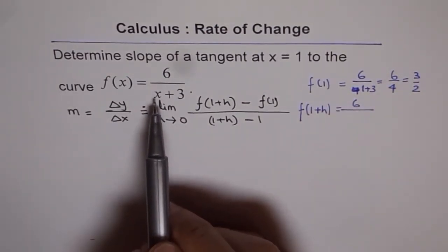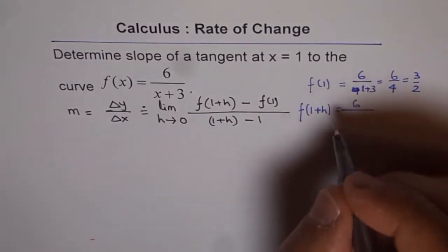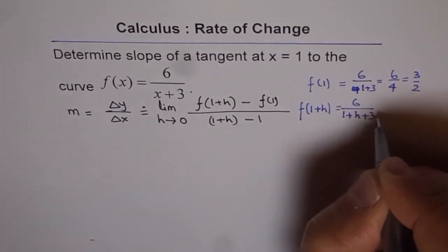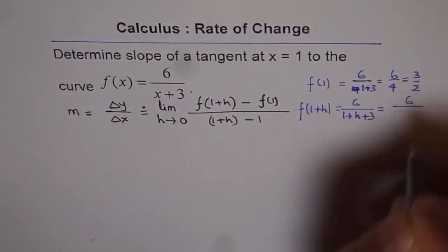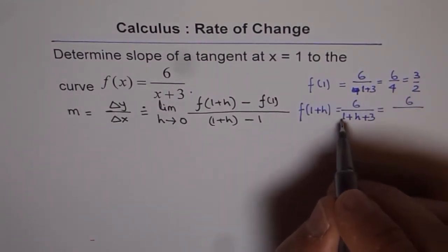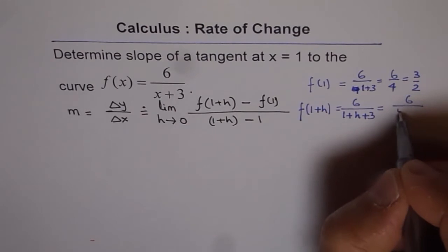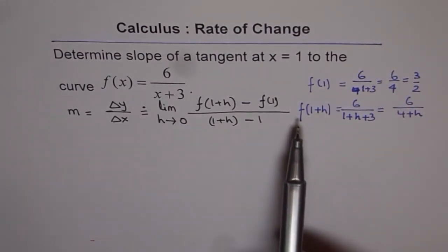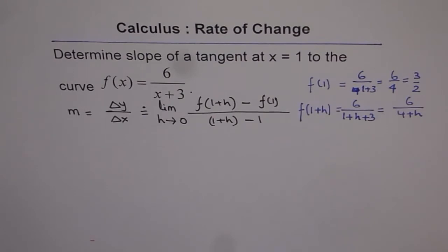now if I replace this with 1+h, then what do I get? 1+h+3, correct? So, I get here 6/(4+h), correct?